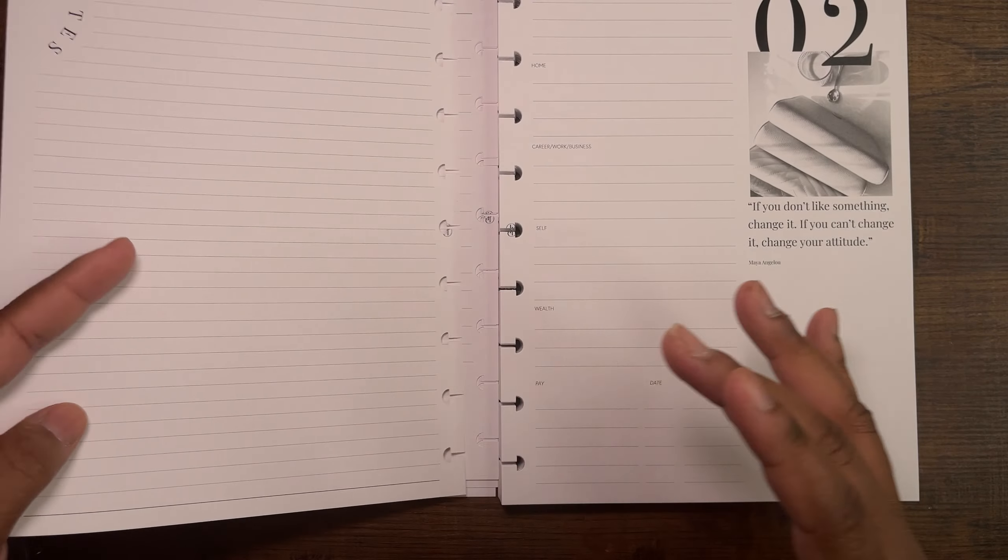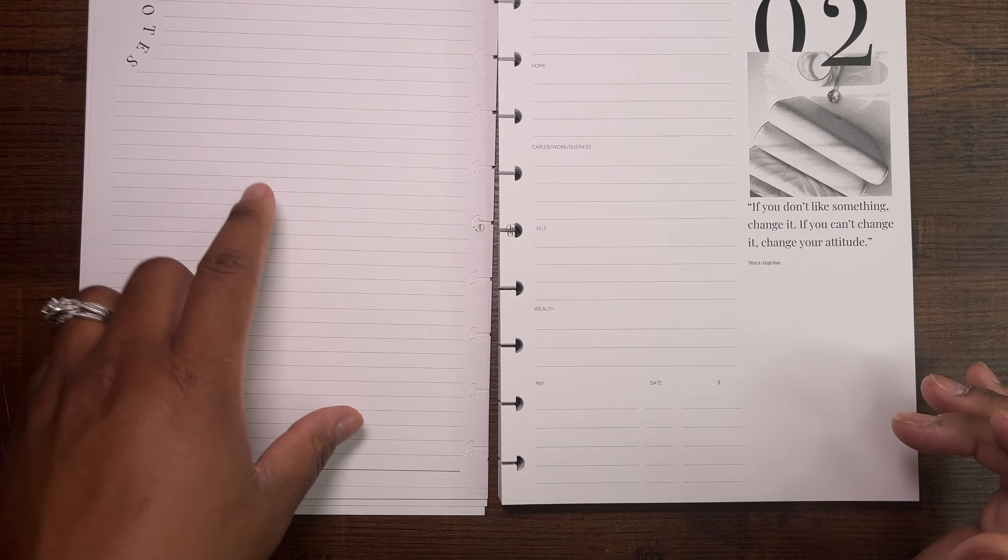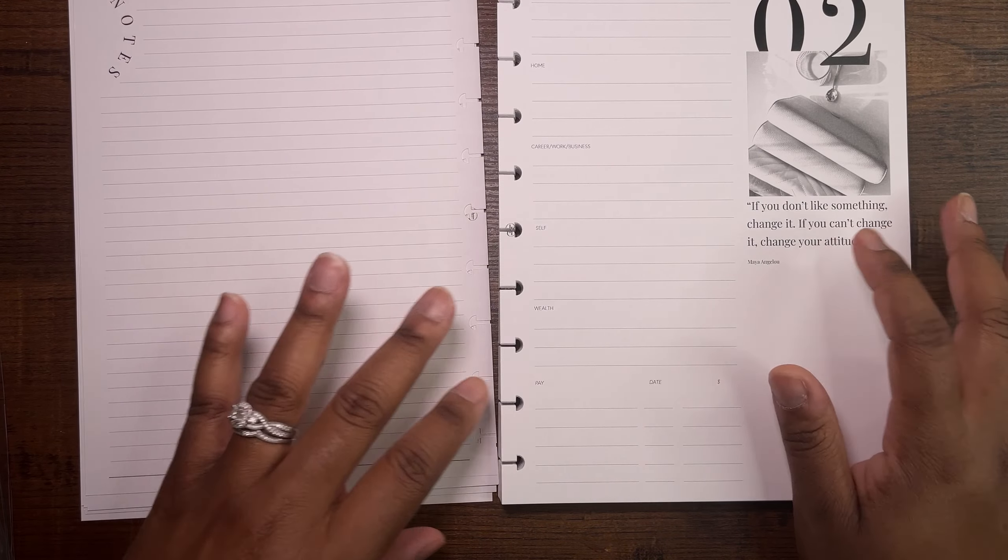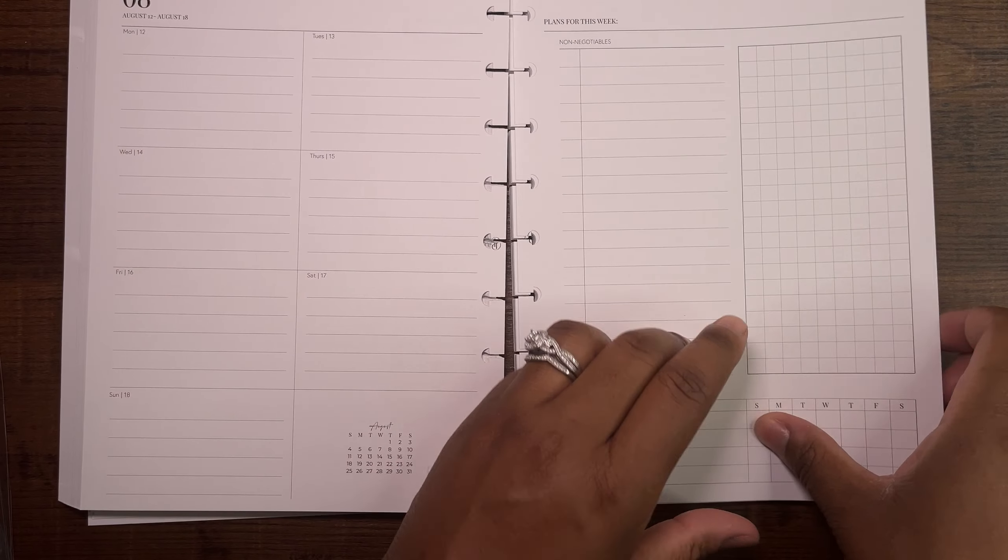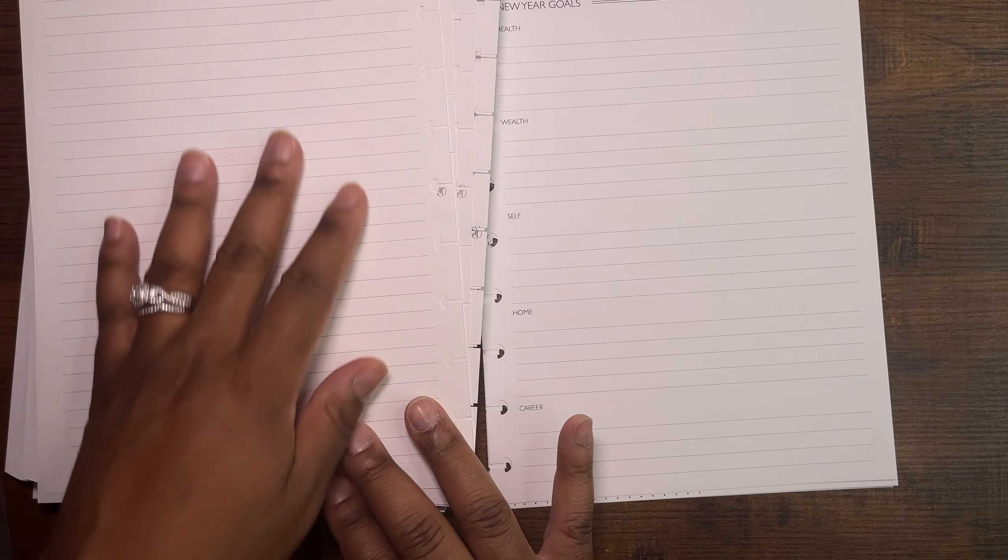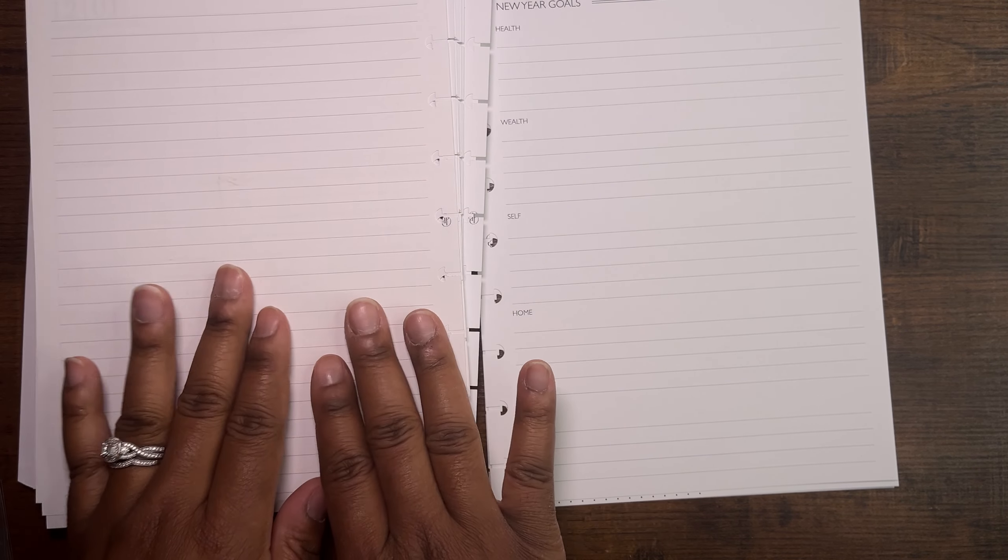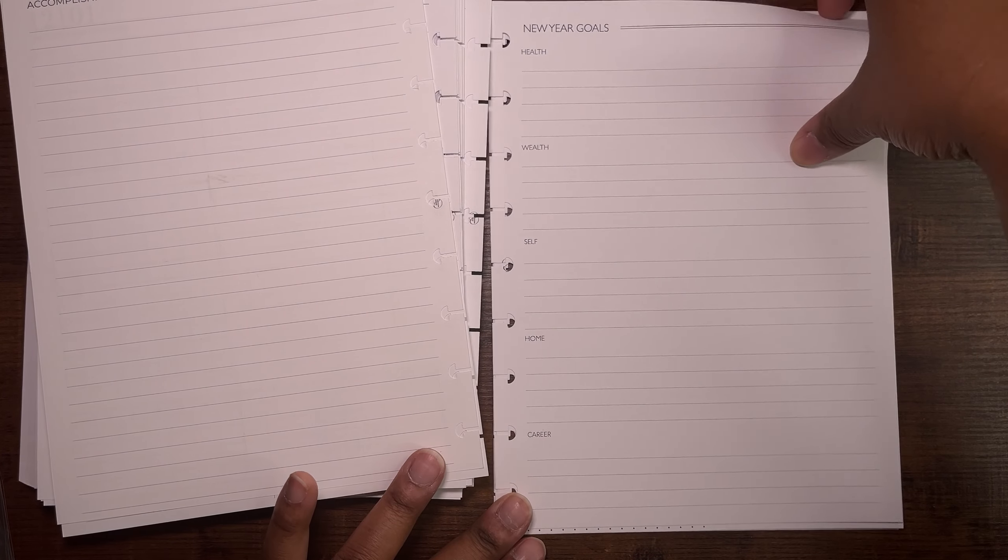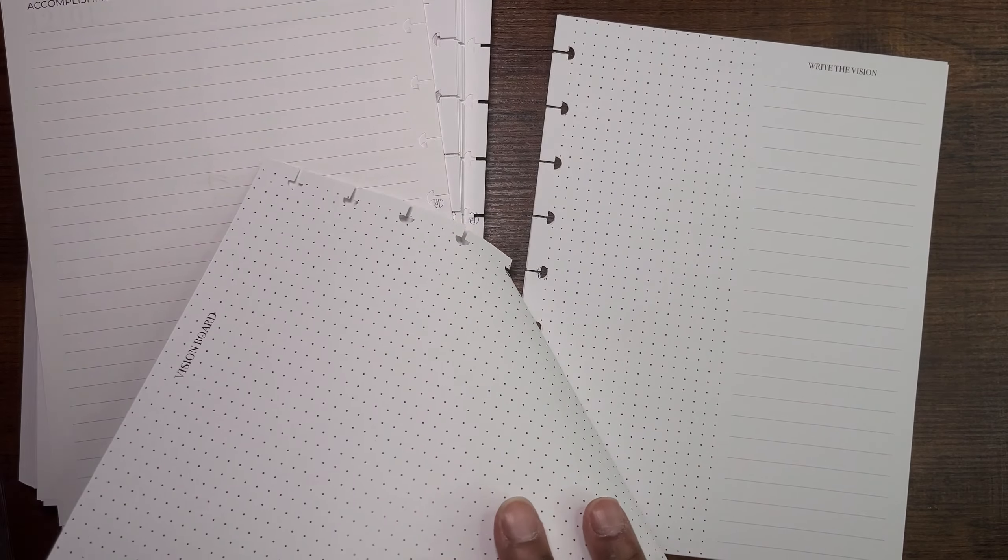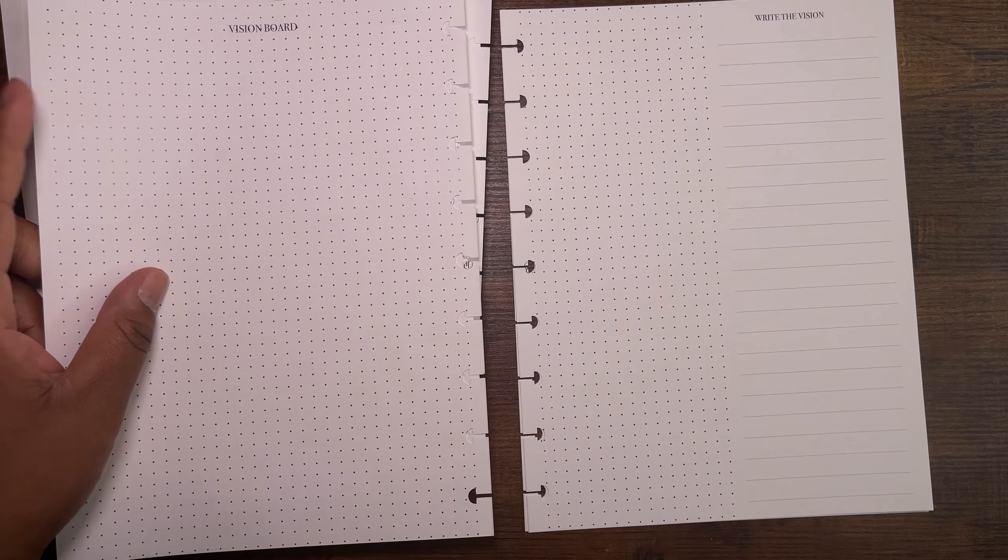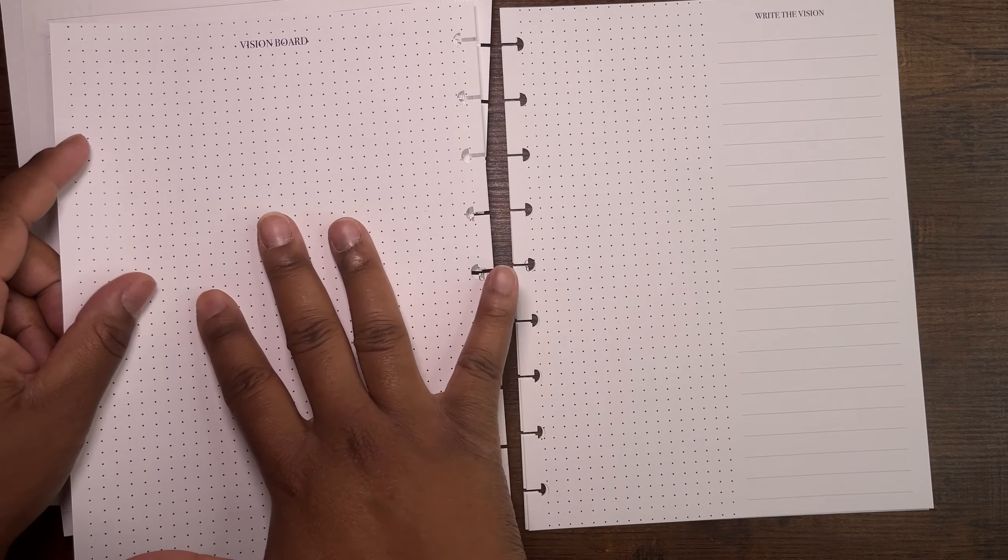You get about four to five weeks of your weeklies and then you get a notes page, which is really dope. Then it looks like there is a new quote on every month, which I think is cool. So we are skipping through. When we flip over we have a page to list out any accomplishments that we have. We have a page to list new year goals if you want to—you can move this to the front or whatever.